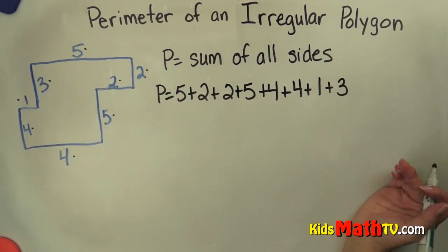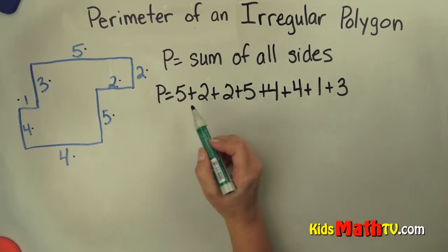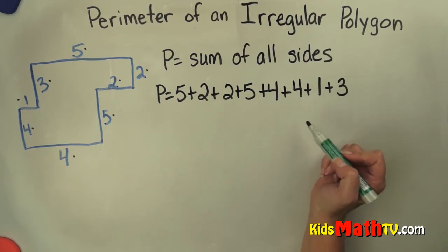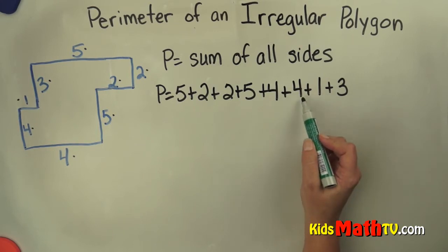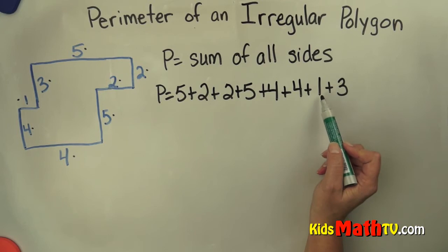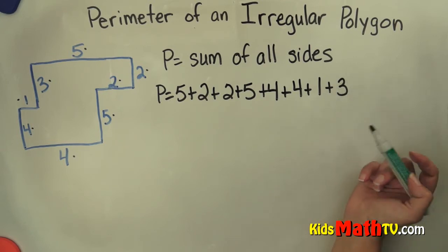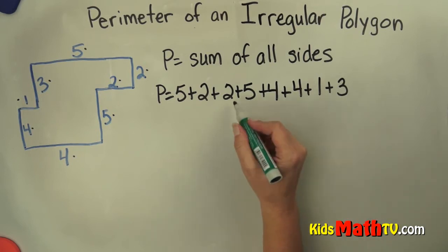So I have all of the sides here. Now I simply add them up. See I have 5 and 2 is 7, 2 and 5 is 7, so that's 14. And 14 and 4 is 18, 18 and 4 is 22. And 22 plus 1 is 23. And 23 plus 3 more is 26.